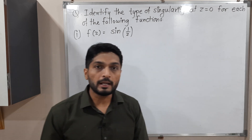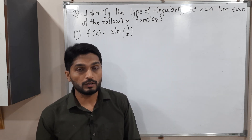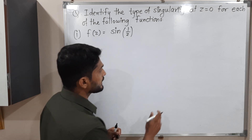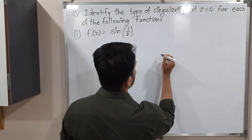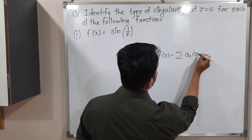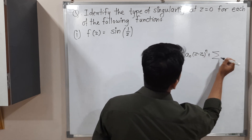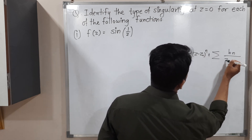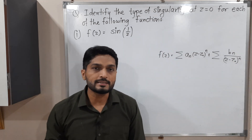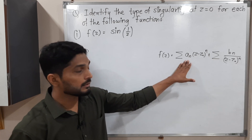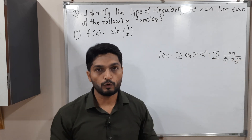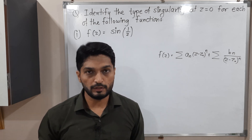Mainly with the help of Laurent series expansion, by observing the Laurent series expansion, we find the type of singularity. The standard form of Laurent series is: f(z) is equal to summation a_n times (z minus z₀) raised to n, plus summation b_n upon (z minus z₀) raised to n. So this is the standard form of Laurent series. The Laurent series has two parts: this is the analytic part and this is the principal part. By observing the principal part of the Laurent series, we find the type of singularity.